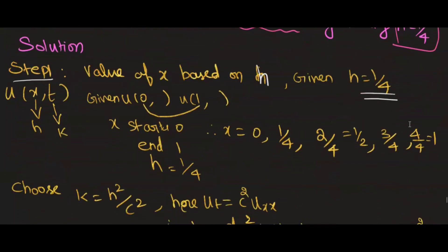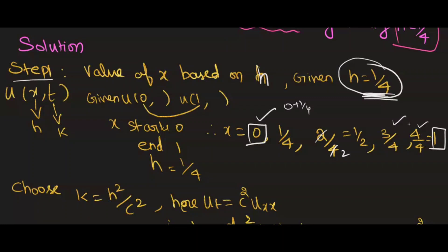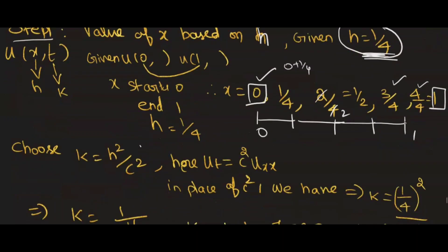X varies from 0 to 1 with step size h = 1/4. So x starts from 0, then 0 + 1/4 = 1/4, then 1/4 + 1/4 = 2/4 = 1/2, then 3/4, then 4/4 = 1. So we get points: 0, 1/4, 1/2, 3/4, 1. Now we have to choose k. k = h² / c². In this problem c² = 1, so k = (1/4)² / 1² = 1/16.